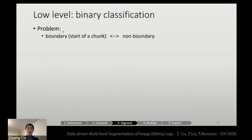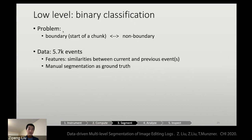So for the low-level, we're actually translating the segmentation problem into a binary classification. We're trying to predict whether each event is a boundary, meaning the start of a chunk, or a non-boundary event. The data we have is 5,700 events. And we computed the features, which is the similarities between current and previous events. And we used our manual segmentation as the ground truth. So we use a support vector machine with linear kernel, a pretty standard machine learning technique, to do the prediction.